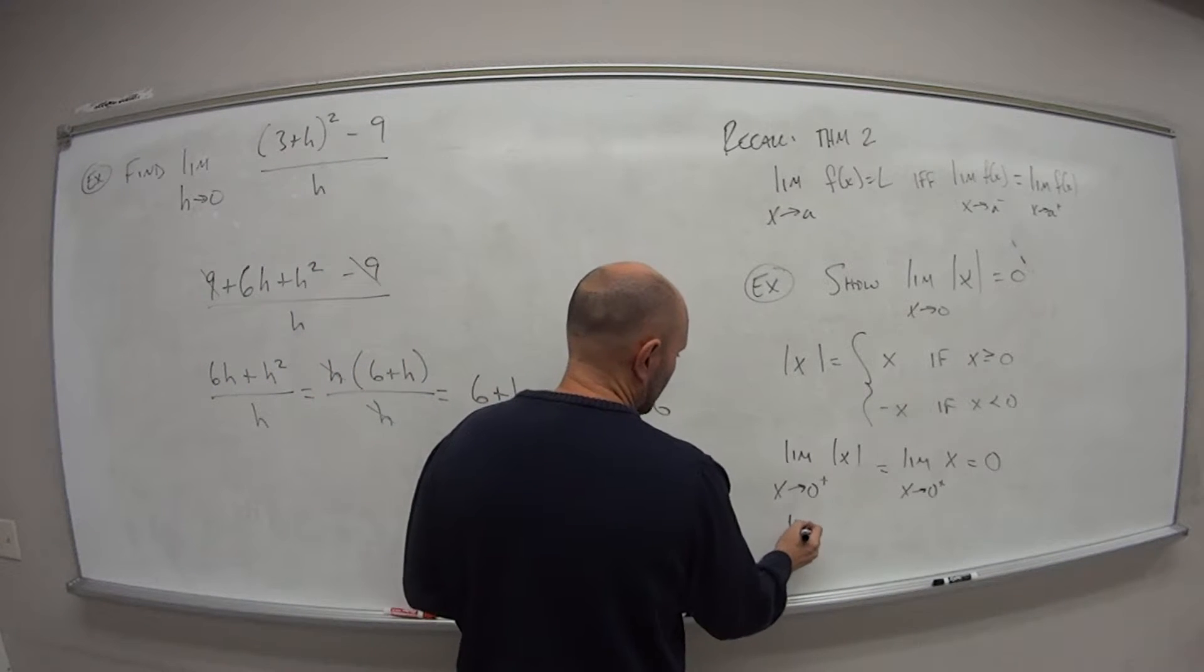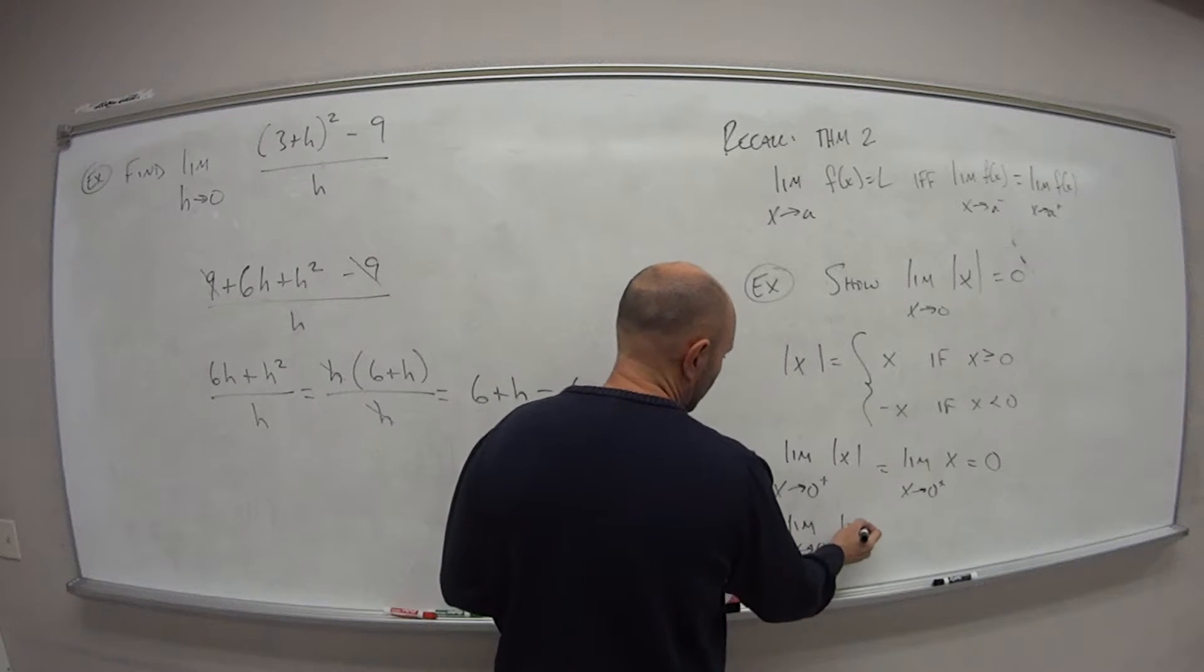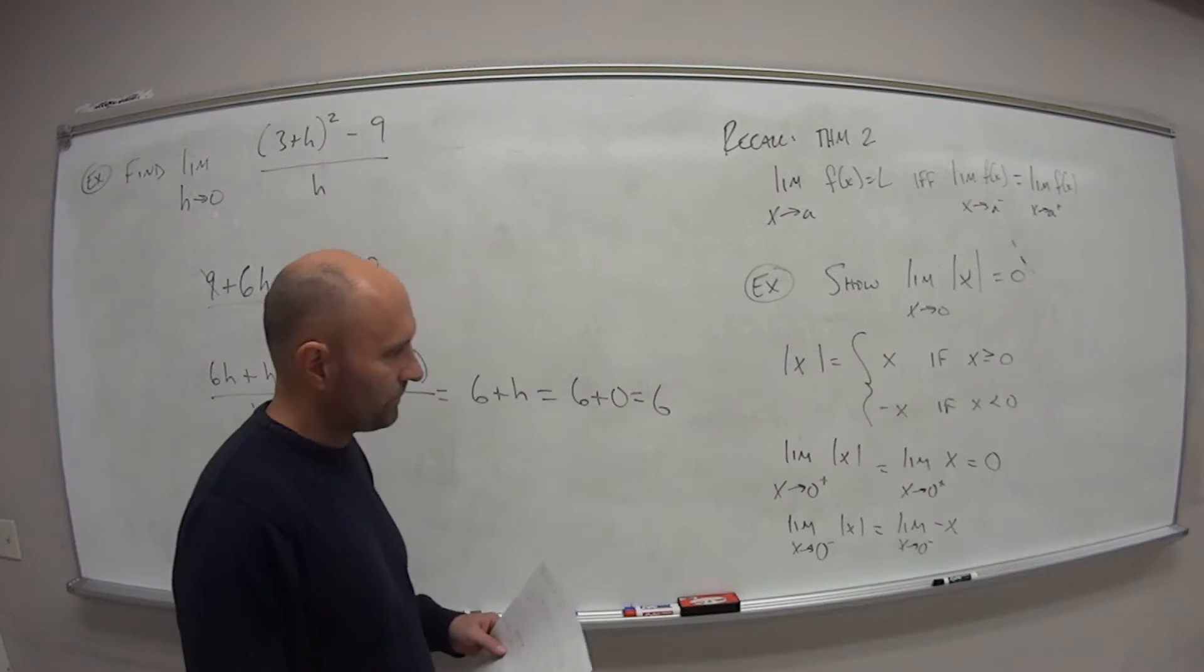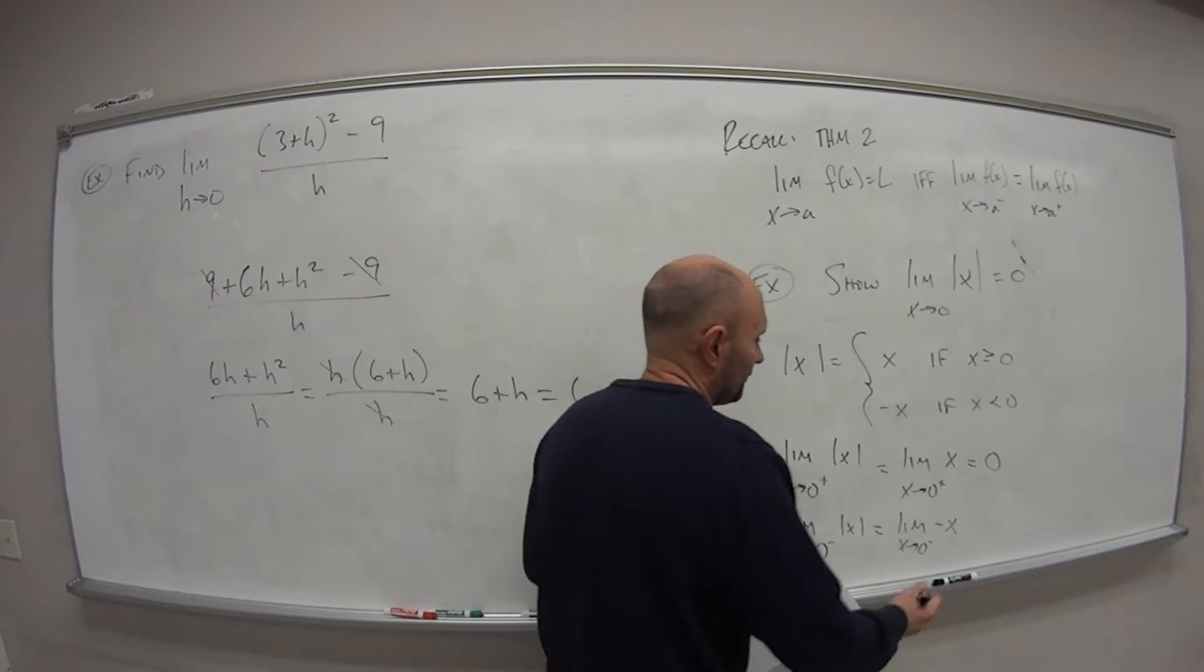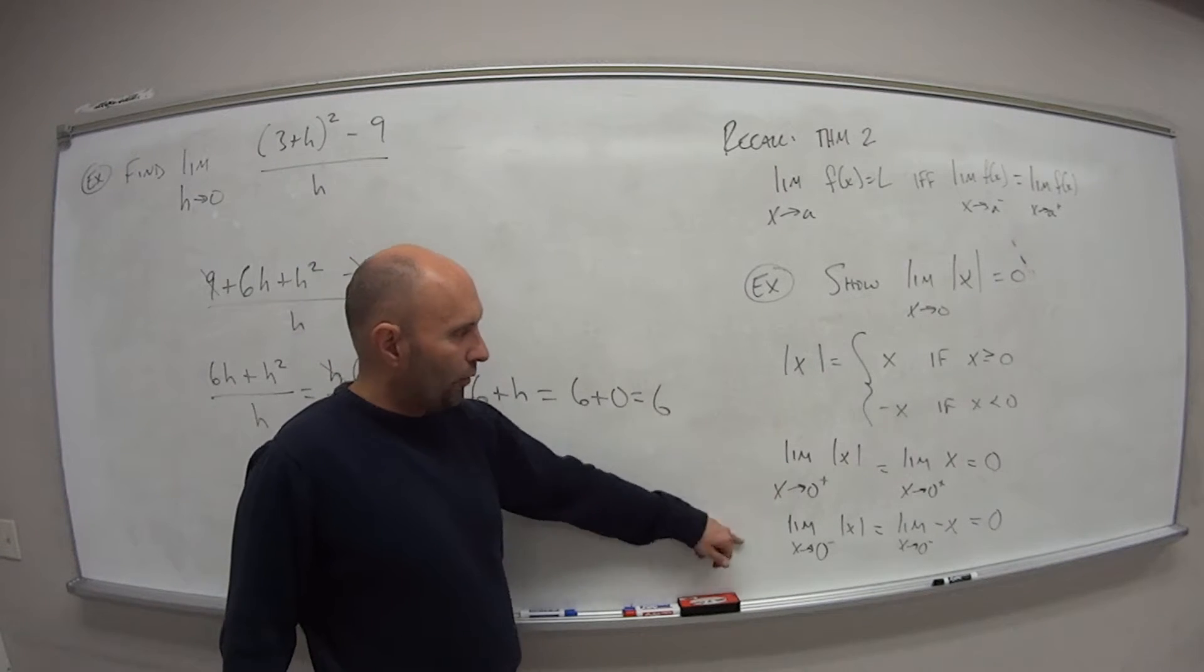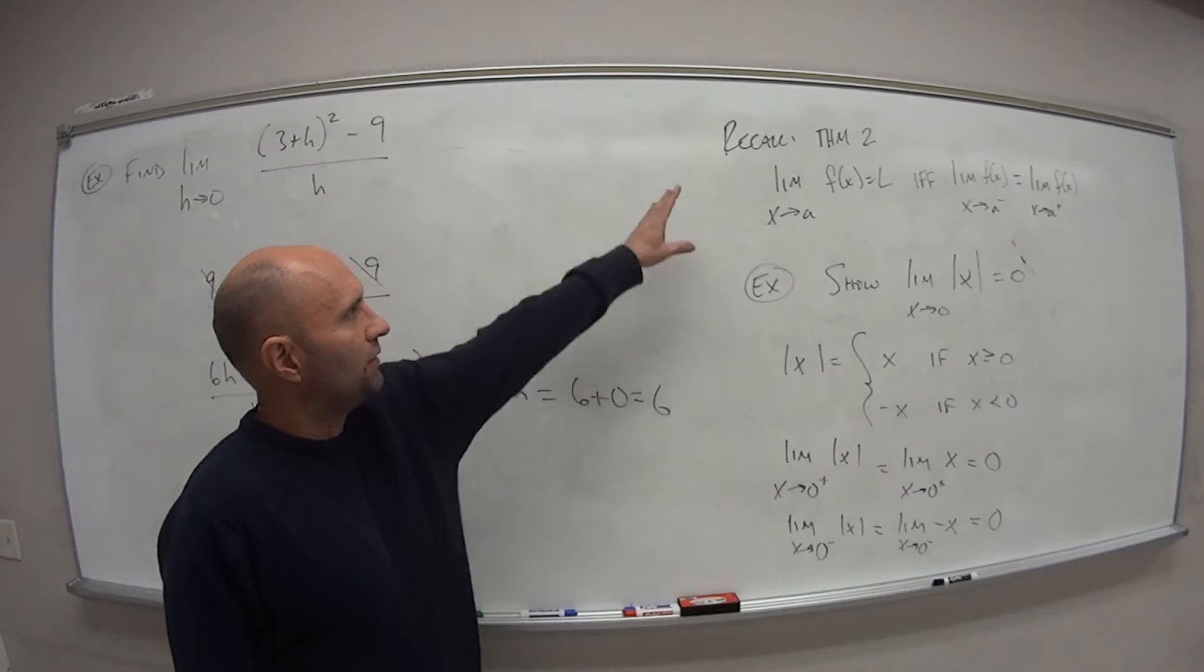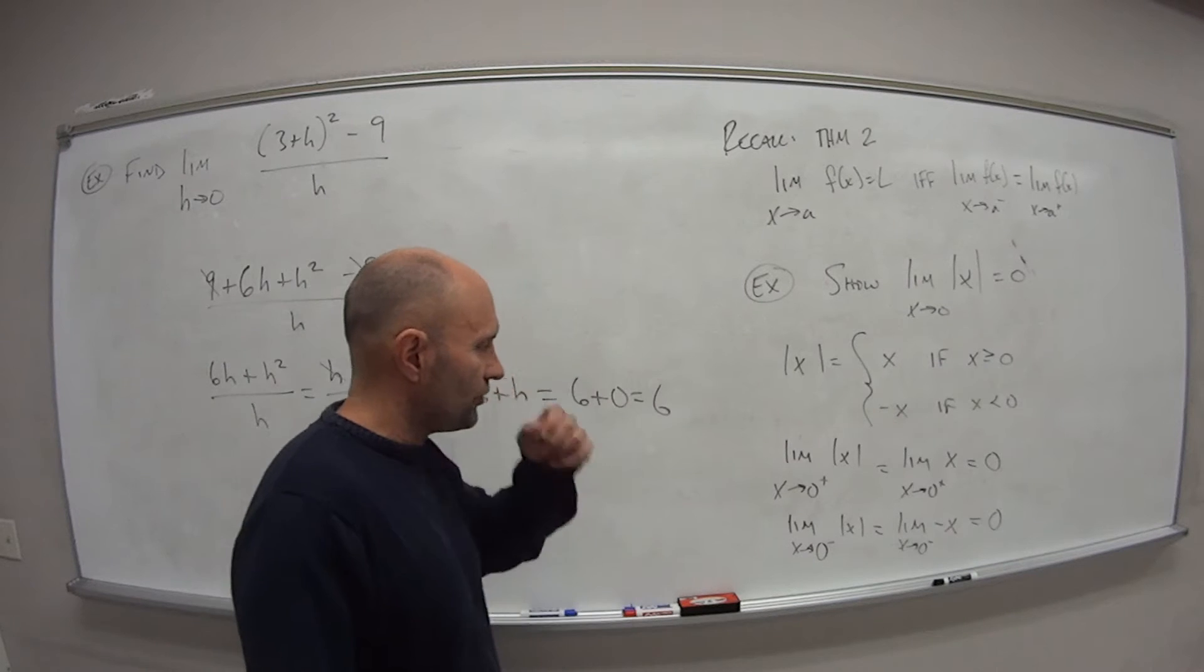How about from the left? So the limit as x approaches 0 from the left side of absolute value of x means that we're looking for the limit as x approaches 0 from the left side of negative x. So again, if we plug in our value for a, negative 0, negative 0 is the same thing as 0, so that's 0. So because both limits are equal to our specified value 0, whether we're coming from the left or coming from the right, we've shown that by this theorem 2, the limit of the absolute value of x is equal to 0 as x approaches 0.